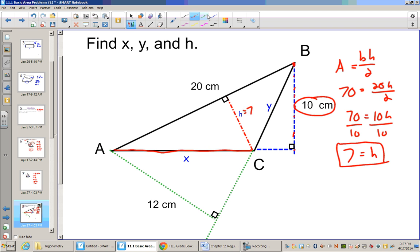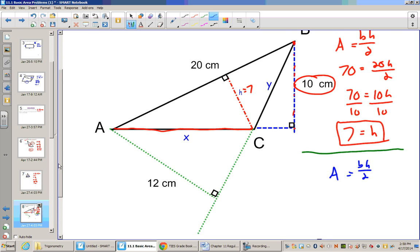So I'll change my color to blue. I'll do my base times height divided by 2 equals area. And so 70 is x times 10 divided by 2. 10 divided by 2 is 5. So I have 5x is equal to 70.